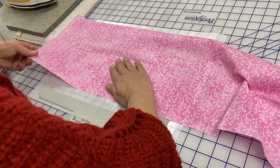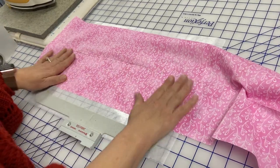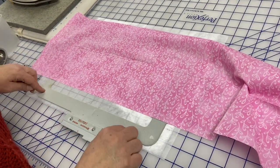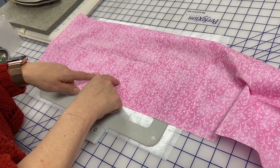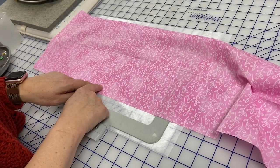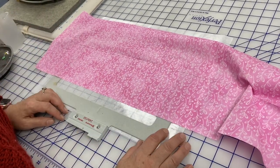So now I have my embroidery area hooped and centered. I'll take it to the machine, base around my design, and let it rip.